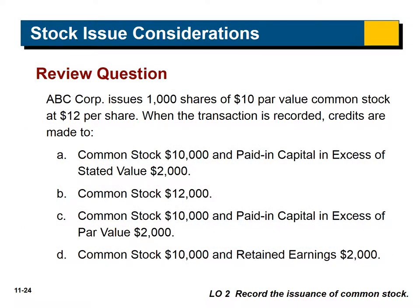ABC issues 1,000 shares of $10 par value at $12 per share. Remember: we credit common stock at par value and additional paid-in capital for anything above par. So we credit common stock for $10,000 (1,000 × $10), and the additional $2 per share — which is $2,000 — goes to paid-in capital in excess of par. Therefore, the answer is C.